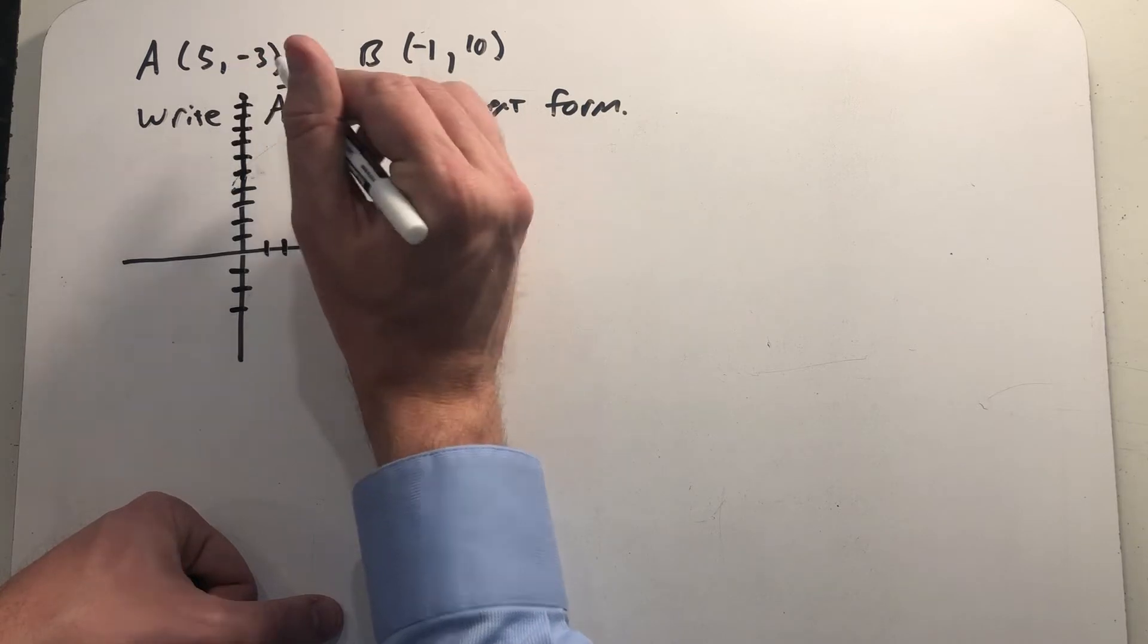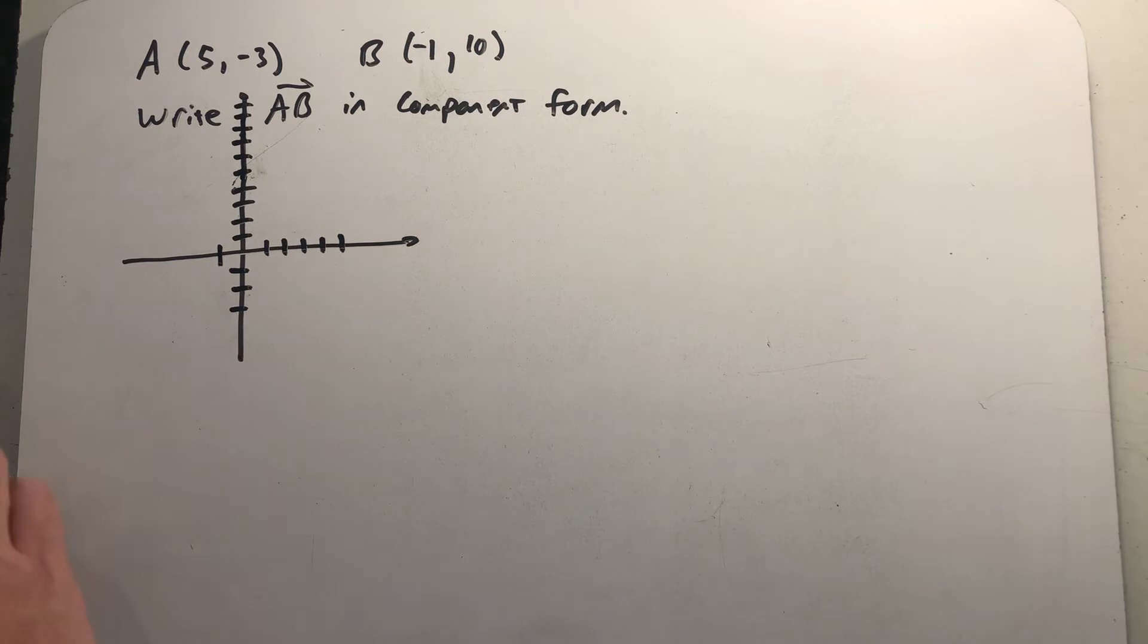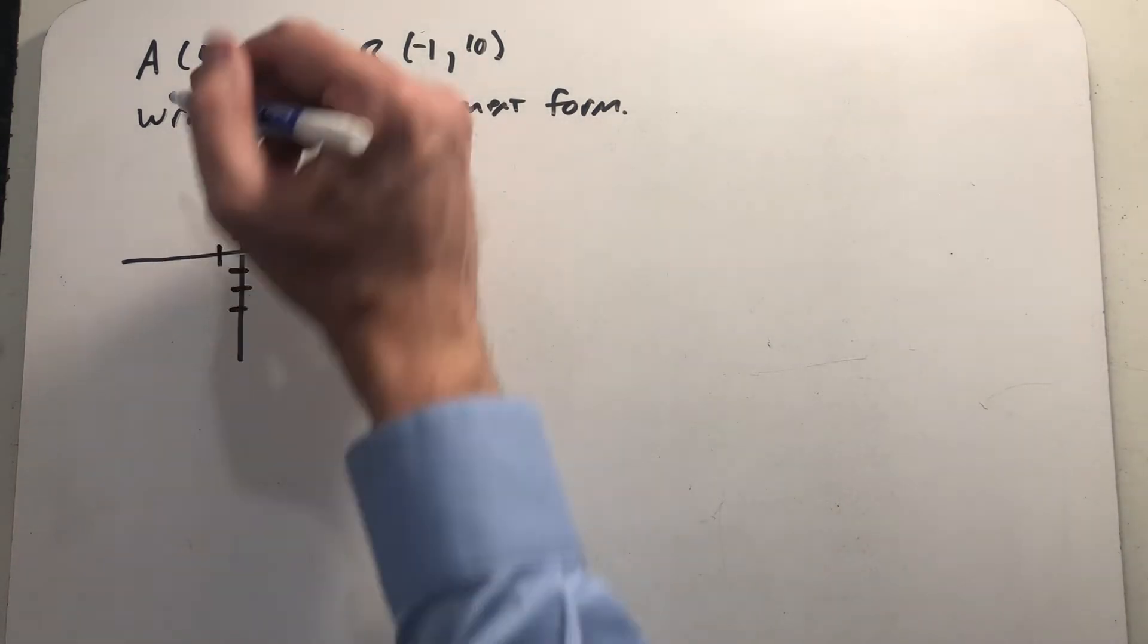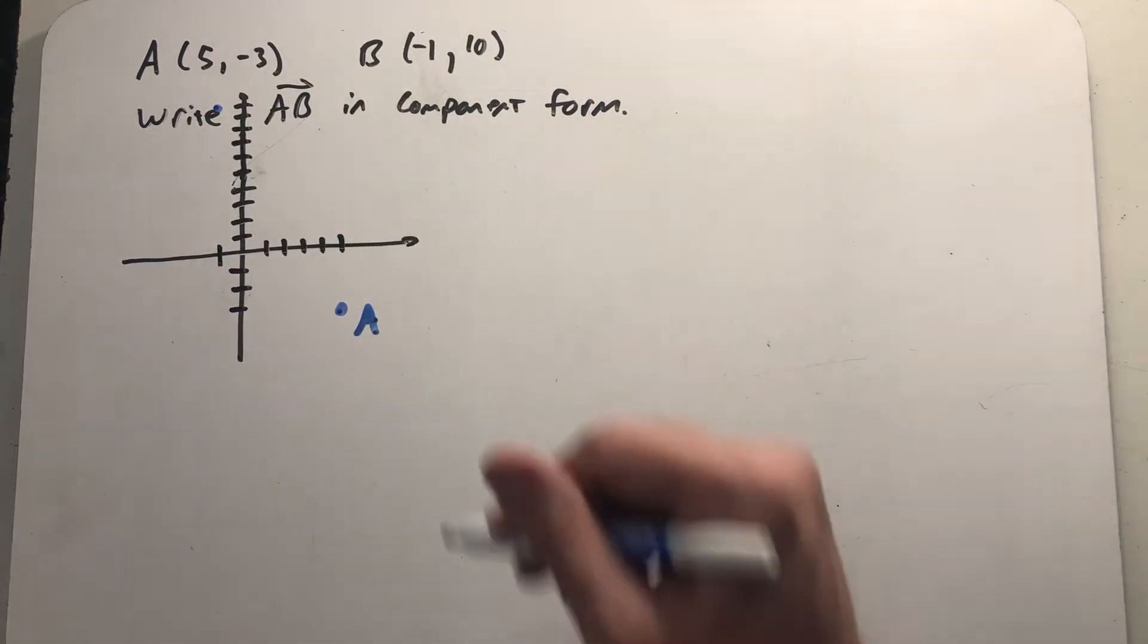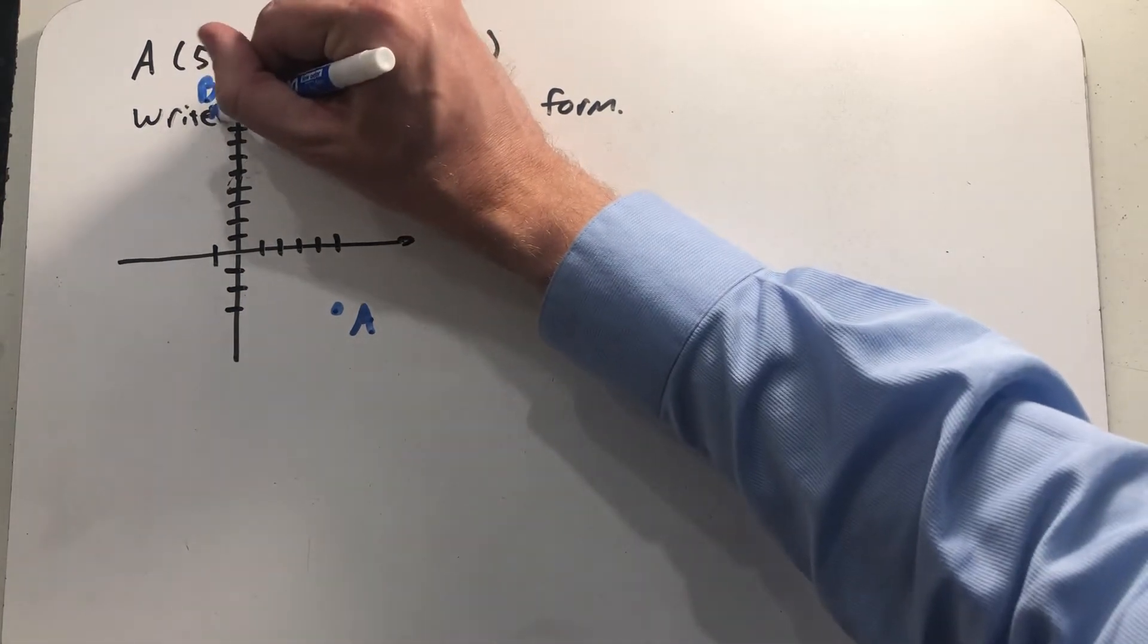I never give myself enough room, but ten all the way up there on the y-axis and minus one. All right, so point A, five comma minus three, and then point B, minus one comma ten. So the vector I'm after is the vector that points from A all the way up to B.